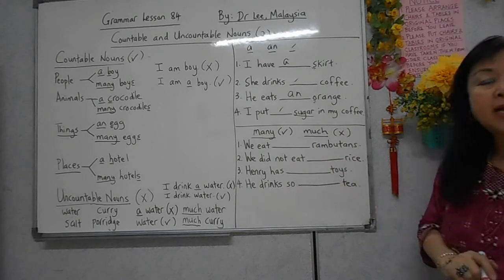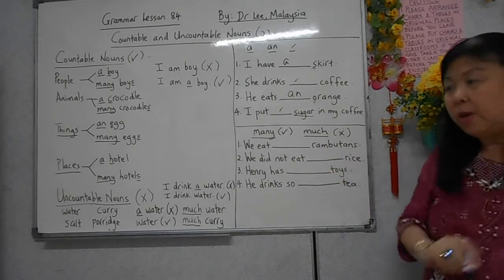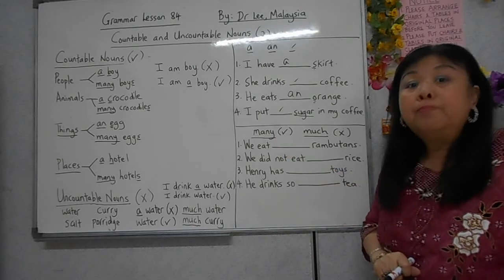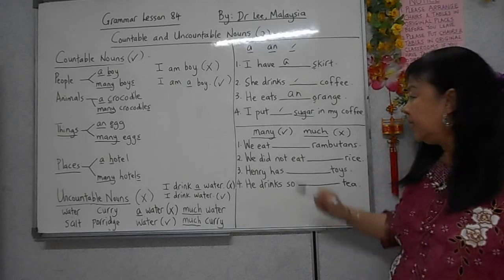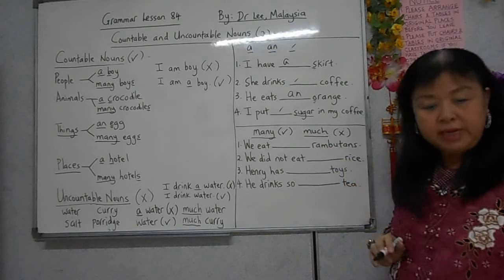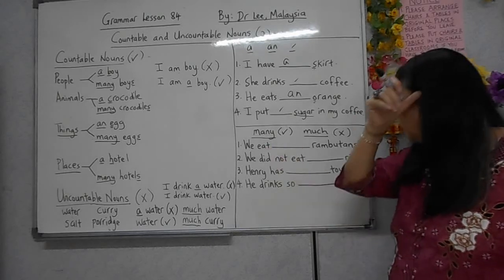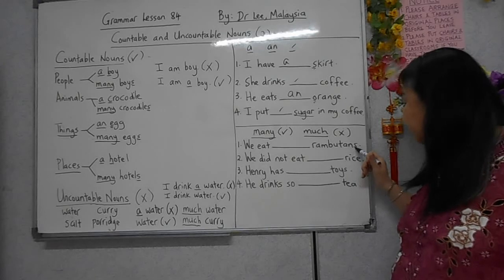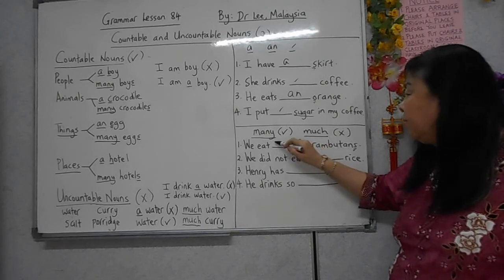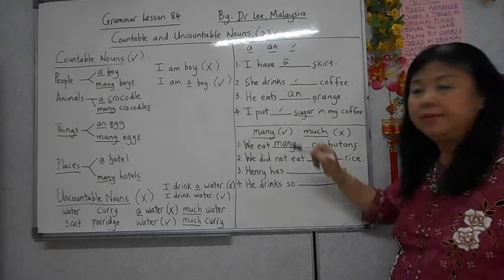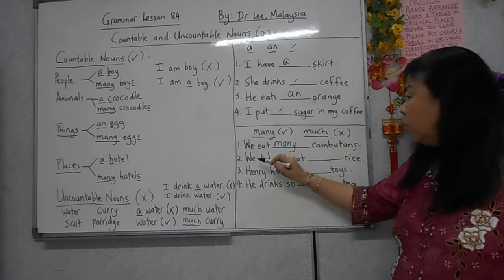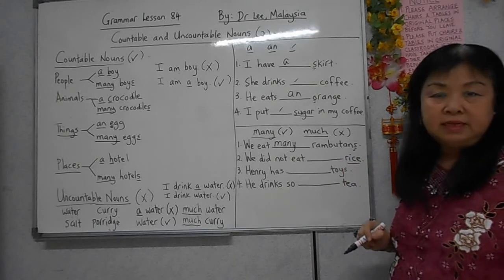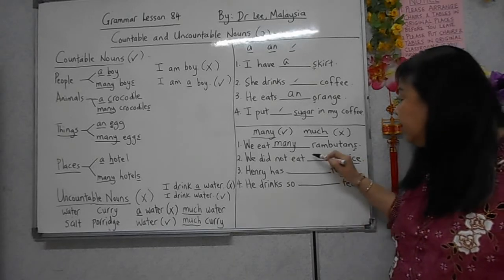Bahagian sini: 'many' atau 'much'. Ada empat soalan. 'Many' artinya banyak dan digunakan untuk benda yang boleh kira. Kita mesti tengok sama ada boleh atau tidak boleh kira. Contoh, 'We eat many rambutans' - rambutan boleh kira, buah-buahan, jadi 'many'. 'We did not eat much rice' - nasi tak boleh kira, jadi 'much'.